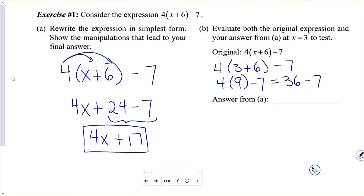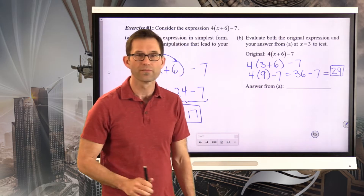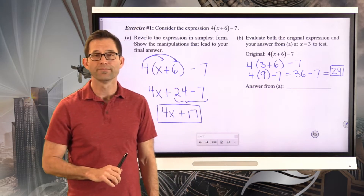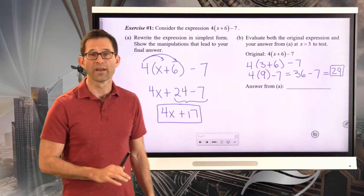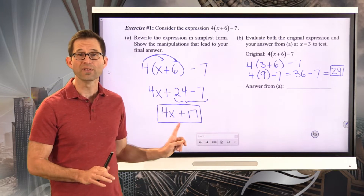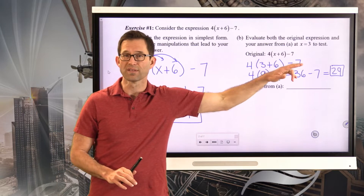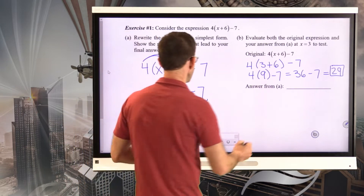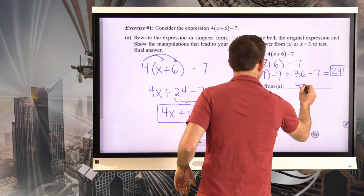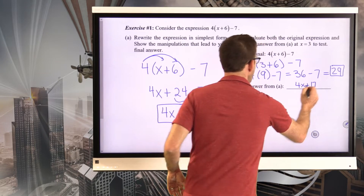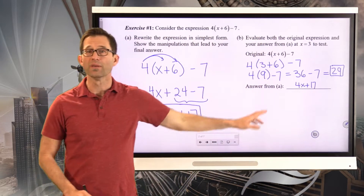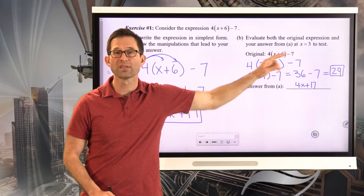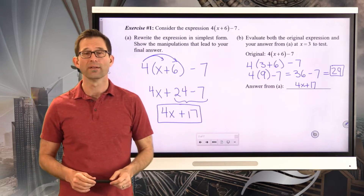Order of operations says do three plus six and get nine. Then four times nine is 36, minus seven gives 29. So that expression when x equals 3 is equal to 29. Now what I'd like you to do is take the simplified expression 4x plus 17, substitute x equals 3 in, and see what you get. Pause the video now.